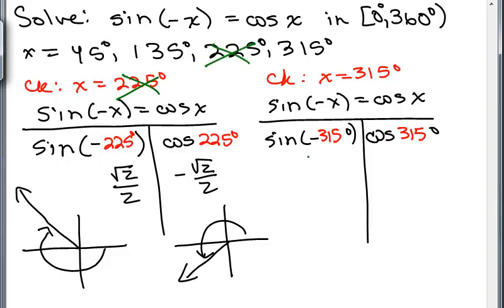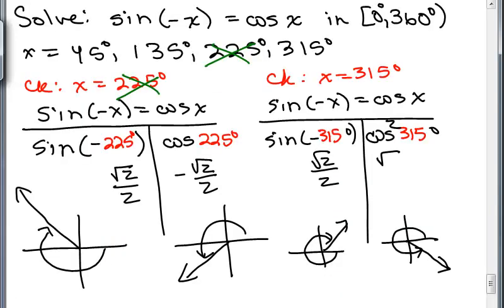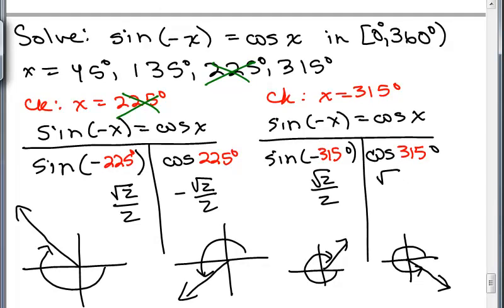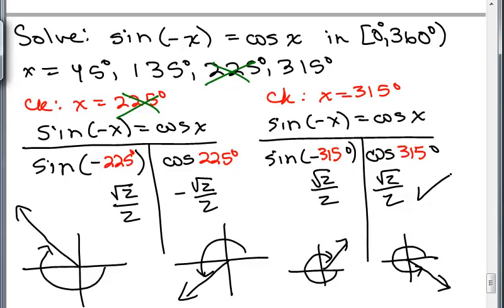How about for sine of negative 315 degrees? Where is negative 315 degrees? It's over here. I'd have to go all the way around, where again, sine is positive. That's the square root of 2 over 2. And the cosine of 315 degrees, that would be all the way down here. The cosine is positive here, and it's square root of 2 over 2. So that one does check. So this is a solution.